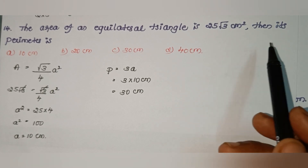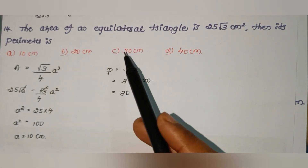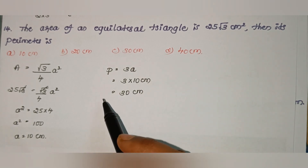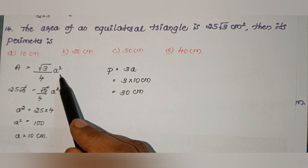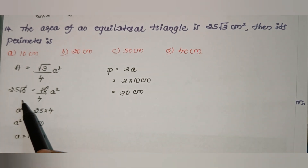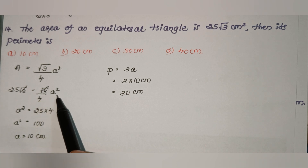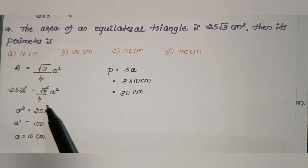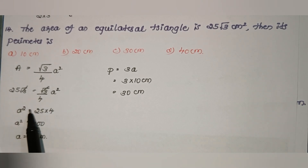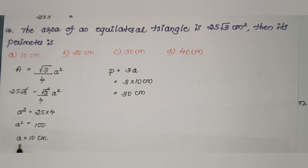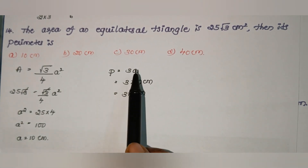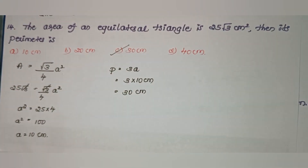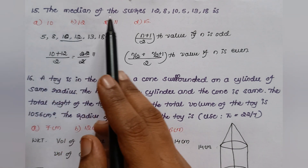The area of an equilateral triangle is 25√3 cm². Find its perimeter. We know the area of an equilateral triangle is (√3/4)a². Setting (√3/4)a² = 25√3, the √3 cancels, giving a² = 100, so a = 10 cm. Perimeter = 3a = 30 cm. Option C.